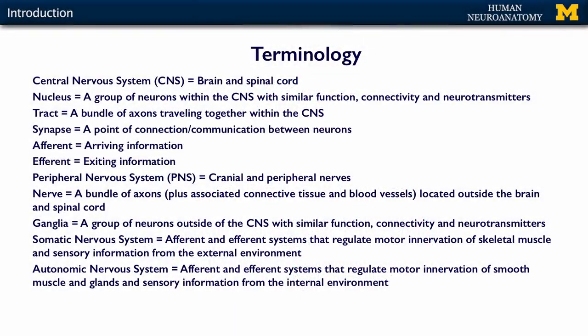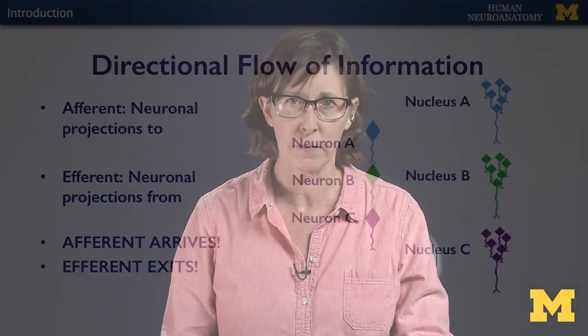Our autonomic nervous system, in contrast, is again going to contain afferent and efferent systems, but they regulate smooth muscle and glands. And they're the sensory apparatus of your internal environment. So all of the things that move around on the inside — like your intestines, your blood vessels, smooth muscles that can control your pupil — all of those things are in the autonomic nervous system.